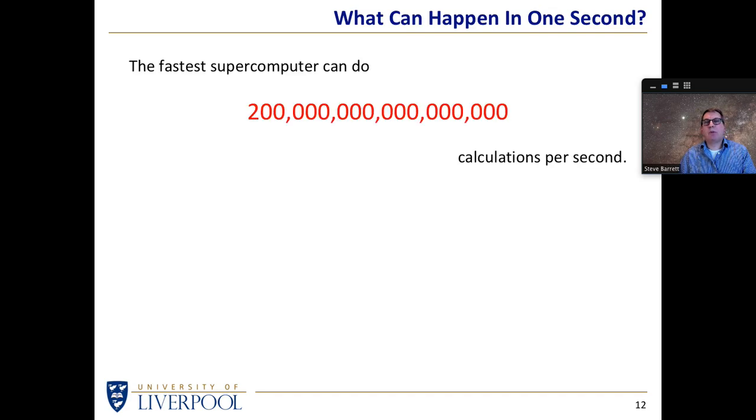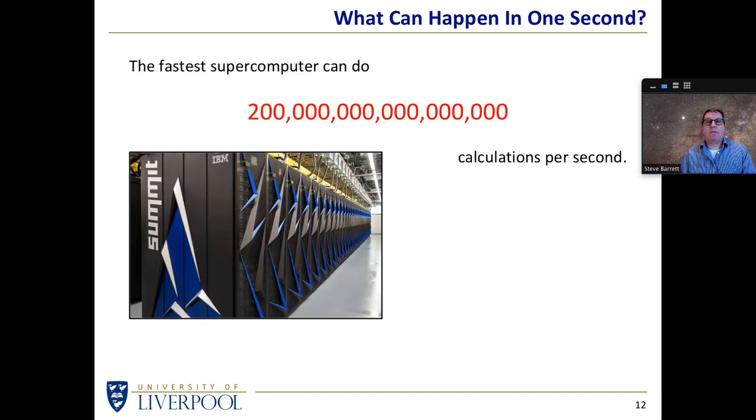So what can happen in one second? Well, if you think about computers, for instance, the fastest supercomputer around can do that many calculations in a second: two hundred thousand million million calculations per second, which is a stunningly fast number. Even the machine sitting in front of you can probably do a billion calculations a second.